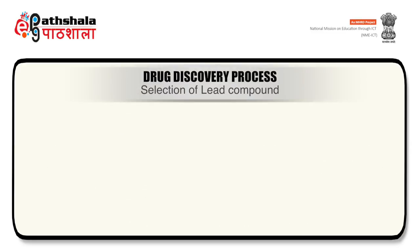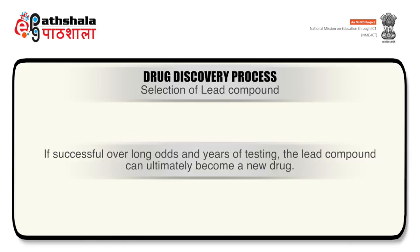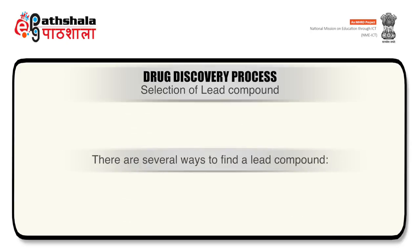The next step in drug discovery is selection of the lead compound. Armed with the understanding of the disease and the target identification, scientists are ready to begin looking for a promising molecule called a HIT that could act on their target to alter the disease course. If successful, over long odds and years of testing, the lead compound can ultimately become a new drug. There are several ways to find a lead compound.